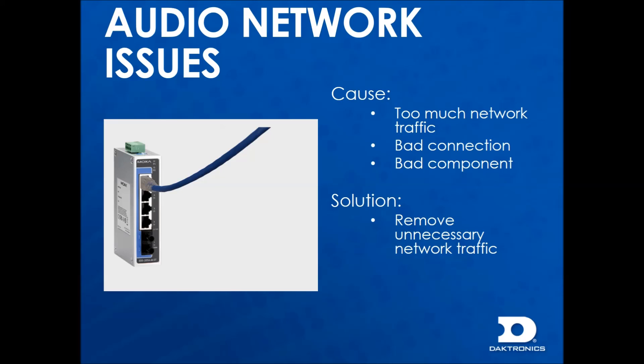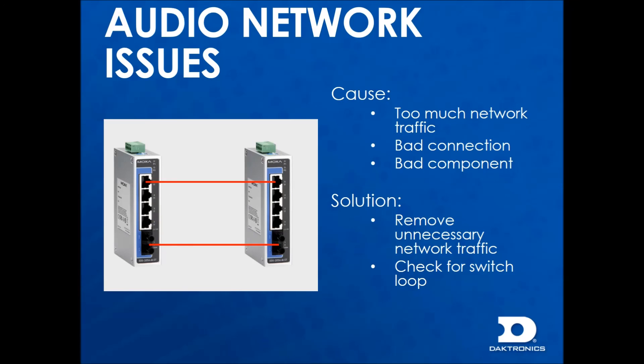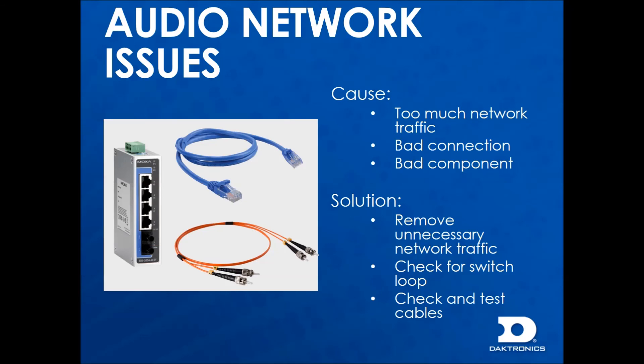To resolve these issues, remove unnecessary network traffic. For example, something may be plugged into the audio switch that shouldn't be and should be removed. Check for switch loops. This is when a network has more than one connection between switches or ports. A Cat5 cable could be plugged into two ports on the same switch or there may be two cables connecting switches causing a loop. Also check and test cables to make sure that a bad cable isn't the issue.